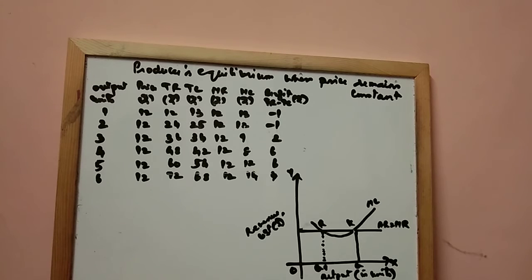Let's see the producer's equilibrium when price remains constant with the help of table and diagram. We have already discussed the values given in the table.